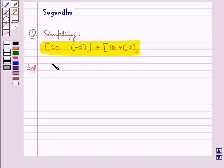We have to simplify 30 minus minus 5 plus 10 plus minus 2. This would be equal to, first consider this bracket.